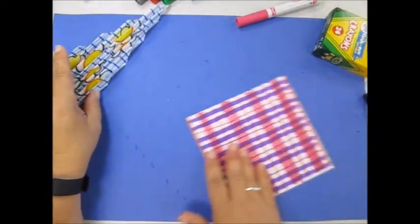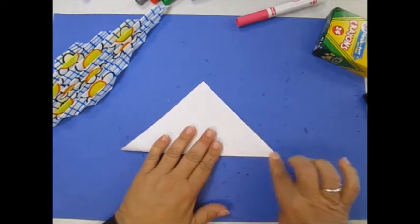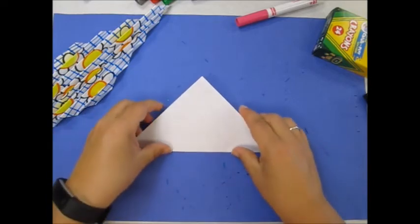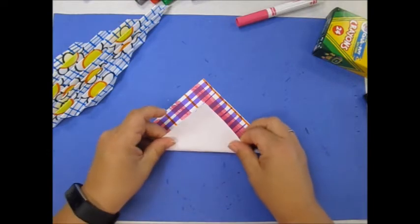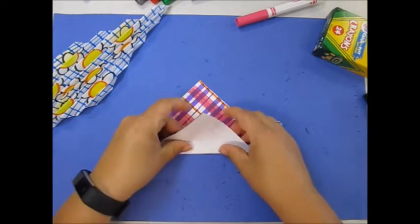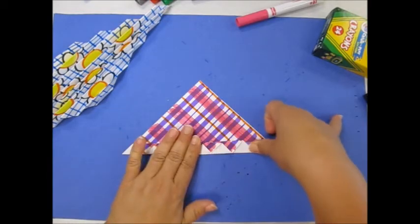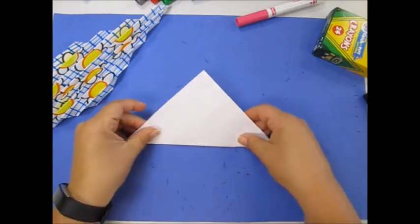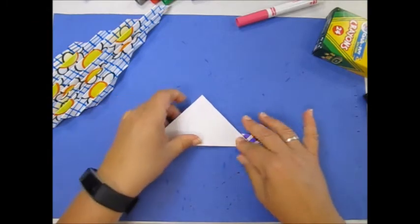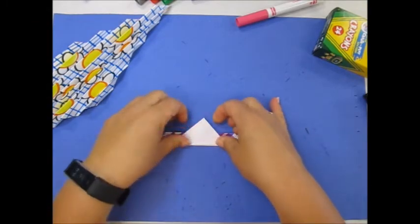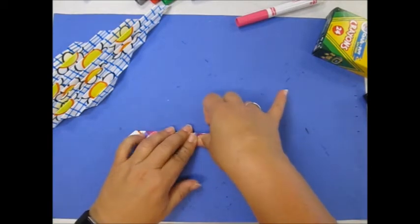I'm going to do the same thing on this piece of paper. I fold it, bring the top one down, making sure it's kind of thin. Go up, down, up, down, up. Flip over. Down, up, down, up, down, up. So now I have one wing and two wings.